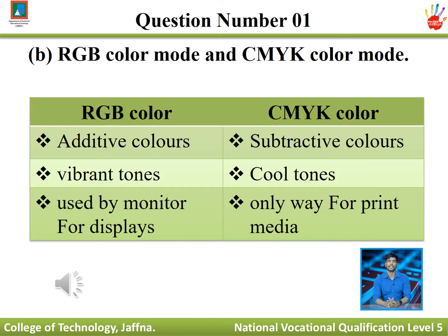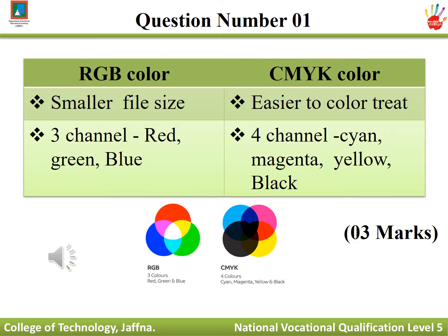Part B: RGB color mode versus CMYK color mode. RGB uses additive colors; CMYK uses subtractive colors. RGB produces vibrant tones; CMYK produces cool tones. RGB is chosen by monitors for display; CMYK is used only for print. RGB has three channels — red, green, and blue. CMYK has four channels — cyan, magenta, yellow, and black.